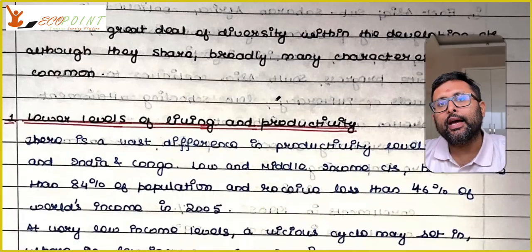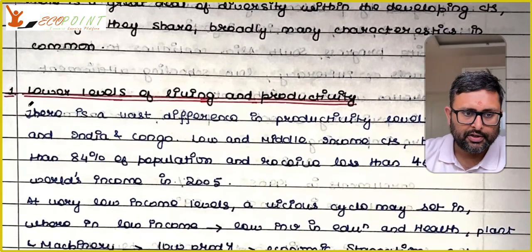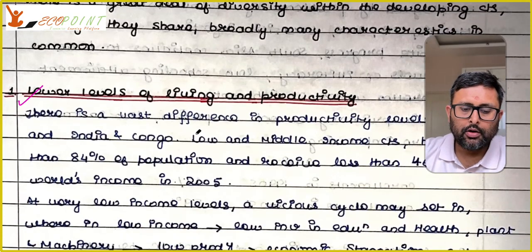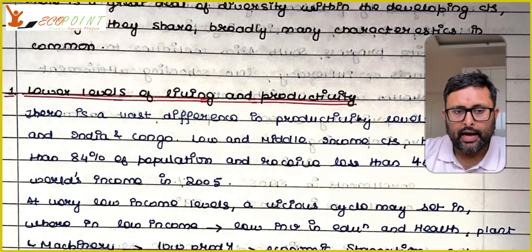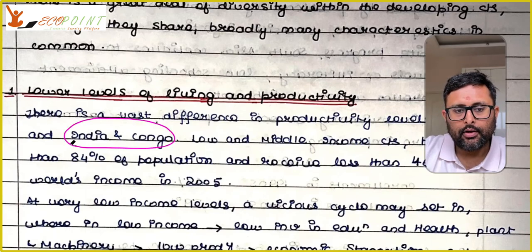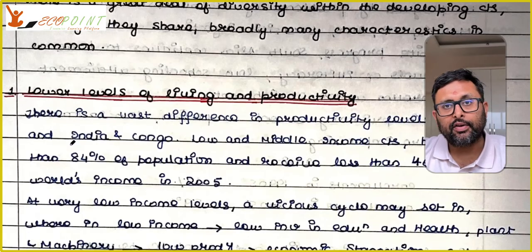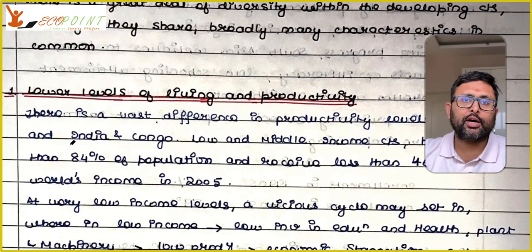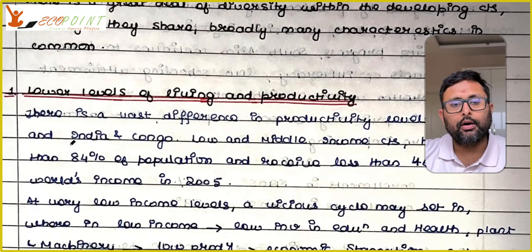Mostly these countries have lower levels of living and productivity. You can take the US on one side and India and Congo on the other side. India and Congo are developing countries and the US is a developed country, and you will find that there is a lot of productivity difference and a lot of income difference between these countries.